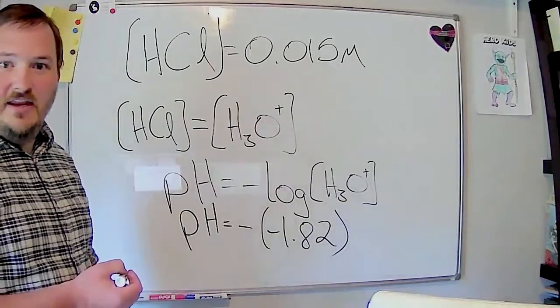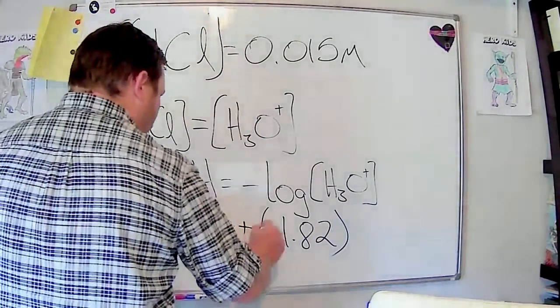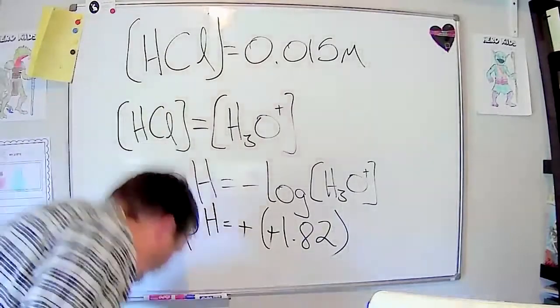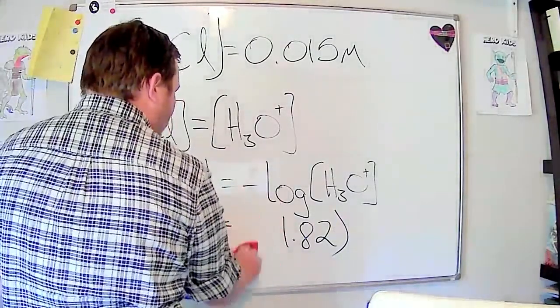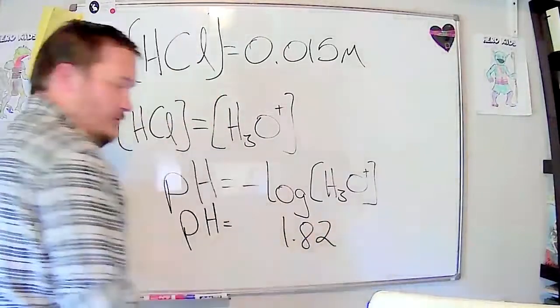And so we get some pH is equal to negative negative - negative 1.82. So negative cancels out a negative, so our pH for this solution is just 1.82.